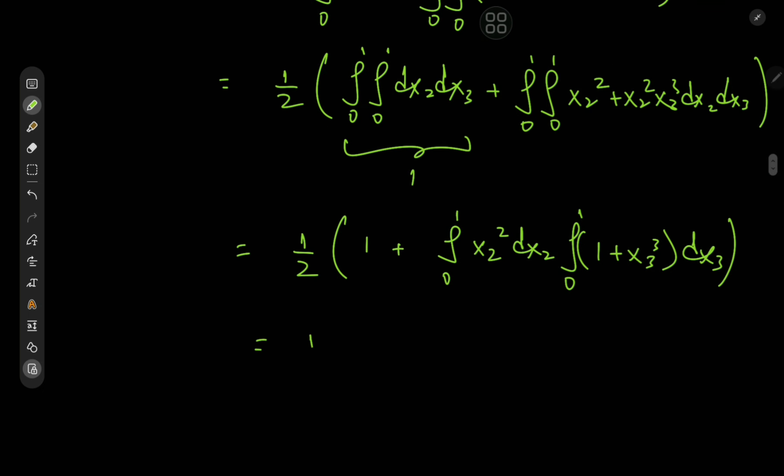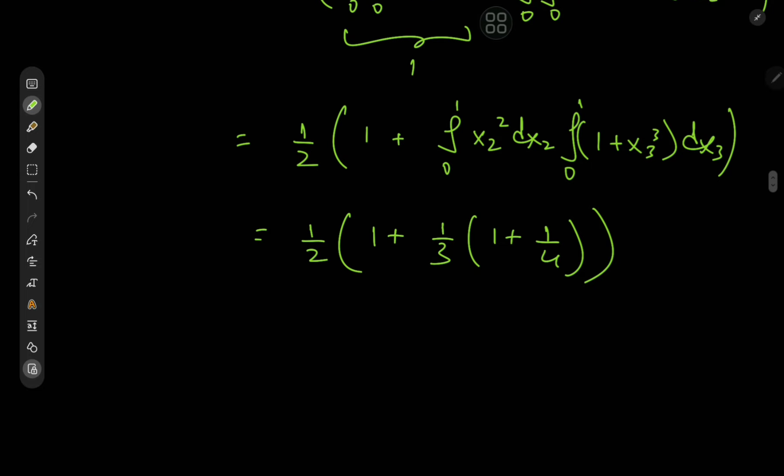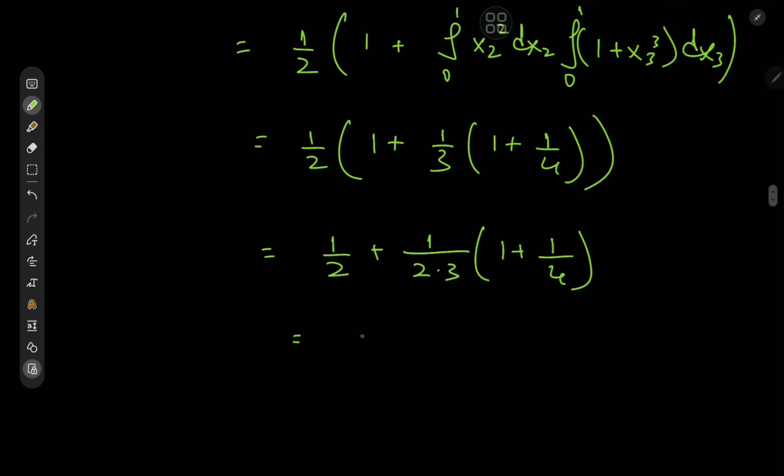So evaluating the integrals gives us 1/2 plus, again over here we would have 1/3 times over here we have 1 plus a quarter. And again the zero limits just vanish anyway. So that means we have 1/2 plus 1/(2*3) plus 1/(2*3*4), which is an even harder calculation than the previous one.